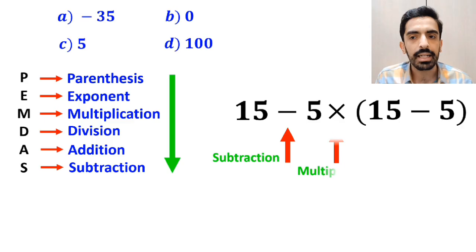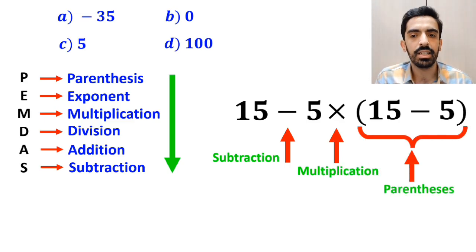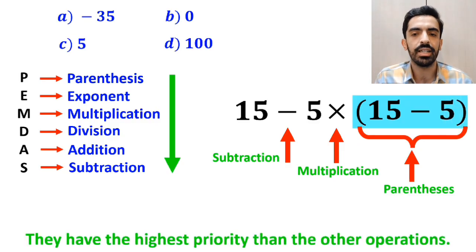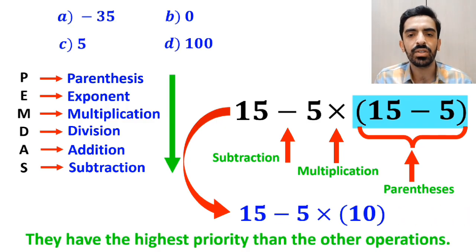We must start with the parenthesis first because they have the highest priority than the other operations. So we can write this expression as 15 minus 5 multiplied by 10.